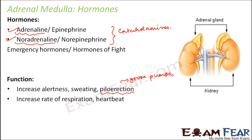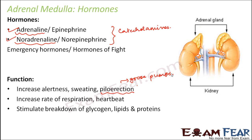These hormones increase the rate of respiration and heartbeat during emergency situations to cope with them. When you are very afraid, you tend to breathe faster to provide more oxygen to different cells of your body. These behaviors that help you handle emergency situations are controlled by the adrenal medulla hormones. They also stimulate the breakdown of glycogen, lipids, and proteins — breaking these complex substances into their simpler forms.